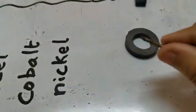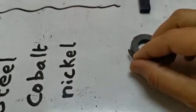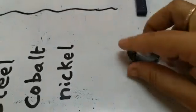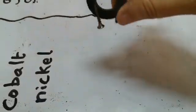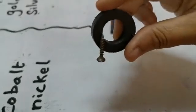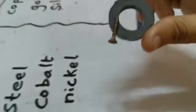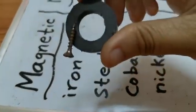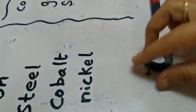This iron screw, I am going to keep on the ring magnet. Is it attracting? Is it attracting with the magnet? Yes! So it is a magnetic metal. Iron is a magnetic metal.